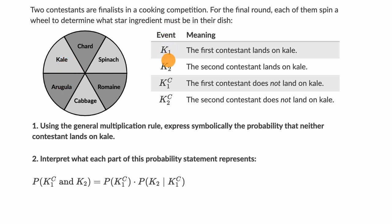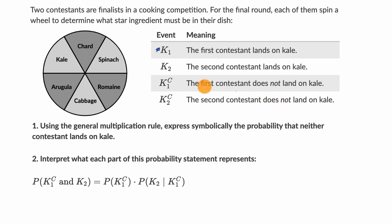They give us different types of events — or at least the symbols for these different types of events — and their meaning. K sub one means the first contestant lands on kale. K sub two means the second contestant lands on kale. K sub one with superscript C is the complement, meaning the first contestant does not land on kale. And K sub two complement means the second contestant does not land on kale. Using the general multiplication rule, express symbolically the probability that neither contestant lands on kale.